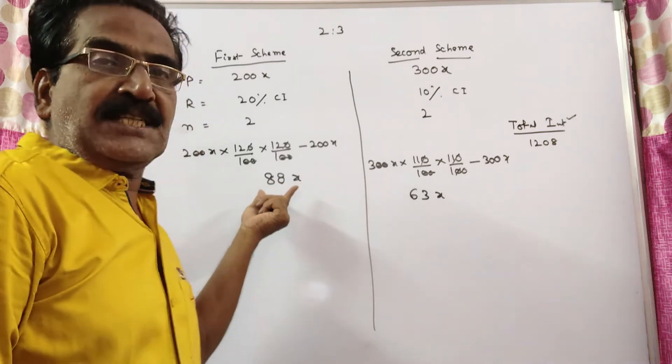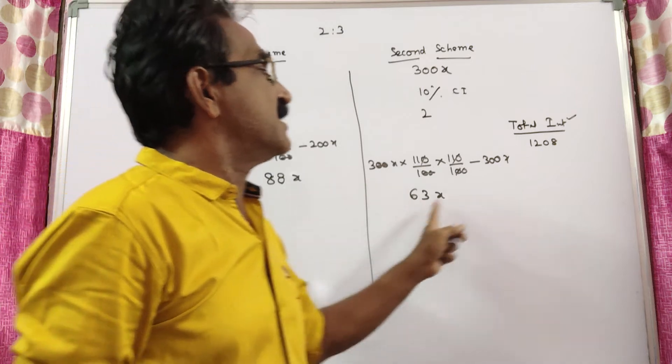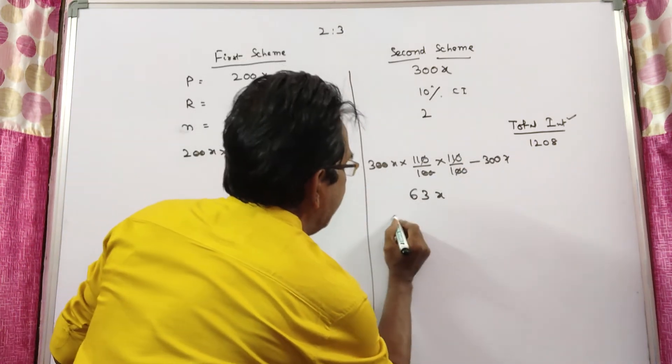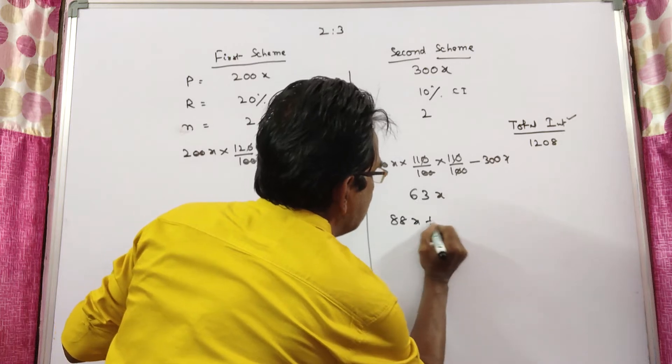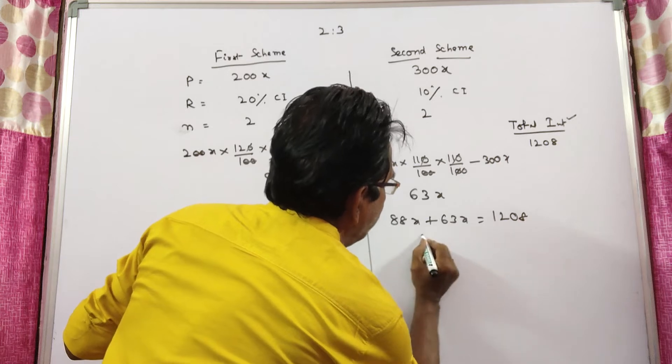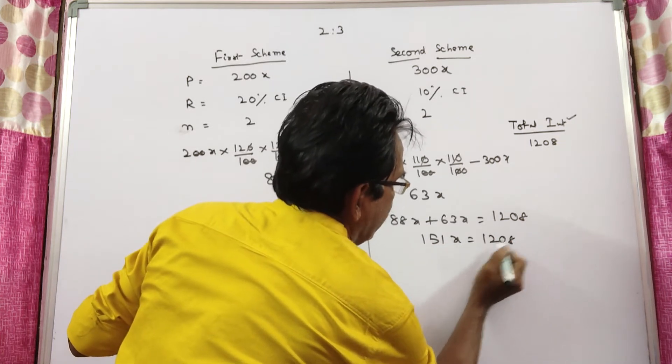So in the first scheme he gets 88x interest, in the second scheme he gets 63x. This plus this is equal to 1208. 88x plus 63x is equal to 1208. 151x is equal to 1208.